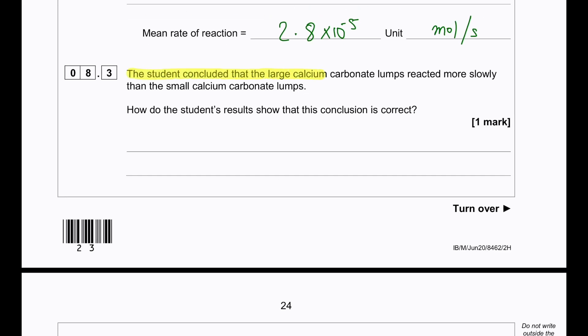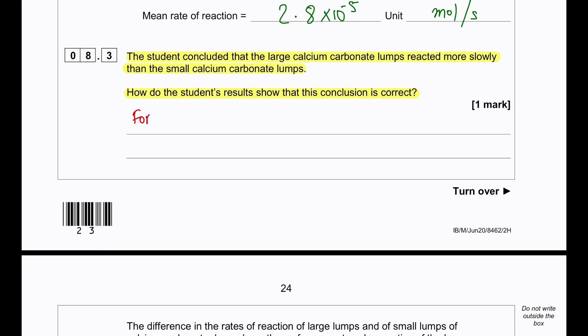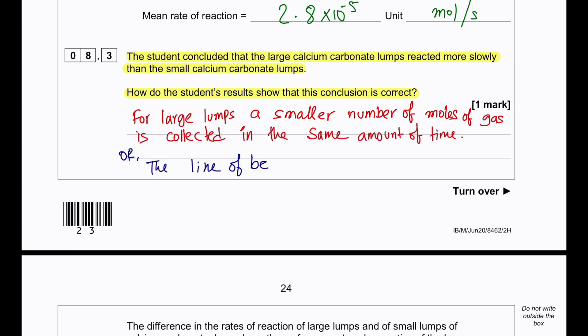The student concluded that the large calcium carbonate lumps reacted more slowly than the small calcium carbonate lumps. How do the student's results show that this conclusion is correct? So for large lumps, a smaller number of moles of gas is collected in the same amount of time. Or we can say the line of best fit for the large lump is less steep. Or we can say for the large lumps more time is needed to collect the same number of moles of gas.